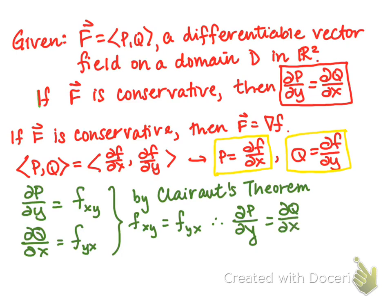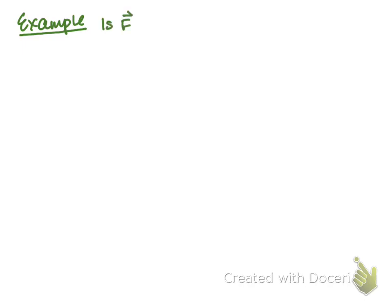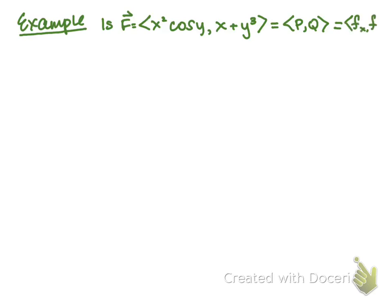This gives us a useful test for when a vector field is not conservative. Let's do an example: is the vector field F = (x² cos y, x + y³) — which is (P, Q) — conservative?